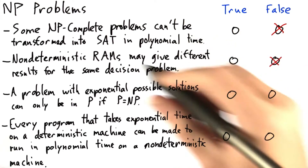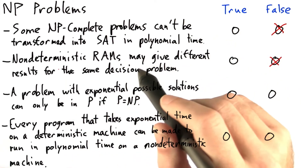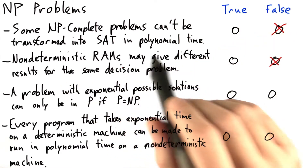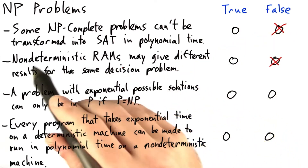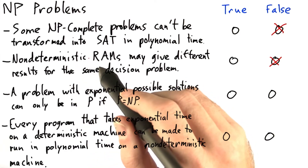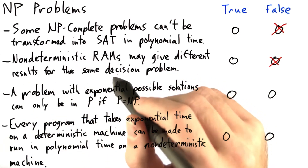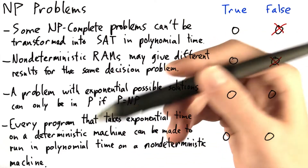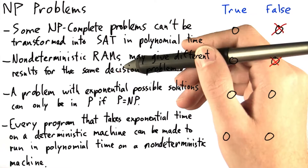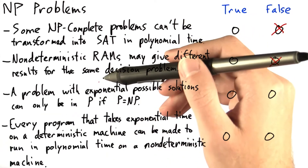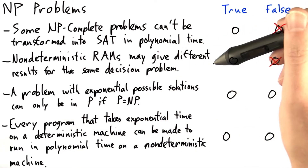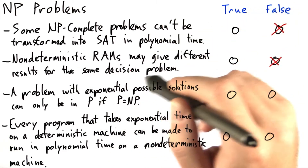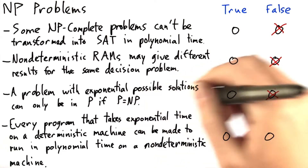The second problem is also false. Non-deterministic RAMs don't give different results for the same decision problem. This is something a lot of people have problems with, but the key is that non-determinism isn't the same thing as randomness. At each step, whenever the 'if better' procedure is called, it makes the best possible decision — not a random one — and it will make the same best possible decision every time. So it won't give different results for the same decision problem.